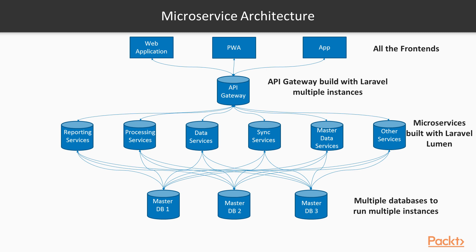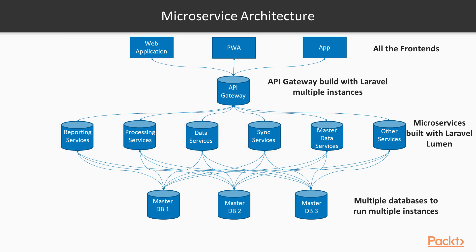And then we have a lot of small applications — or small APIs — which include reporting service, processing service, data service, and sync service, each connected with various databases. This creates a loosely coupled architecture where we have an API gateway managing traffic between your front end and APIs. APIs internally communicate with each other through that gateway, and they use all of your databases.